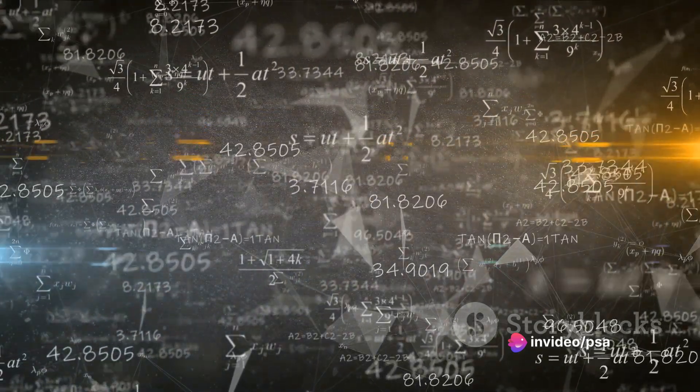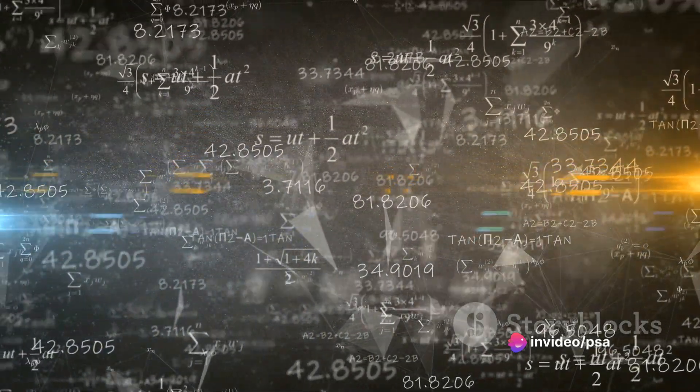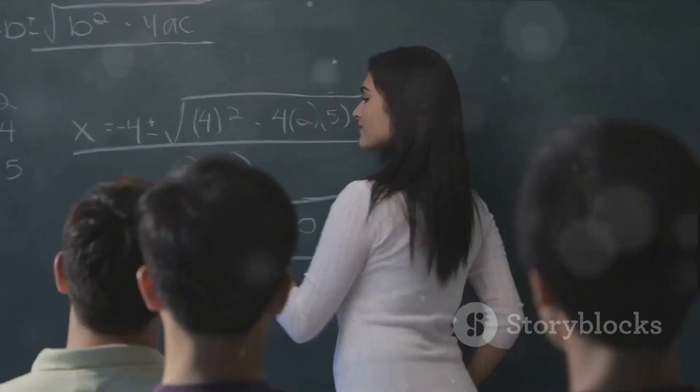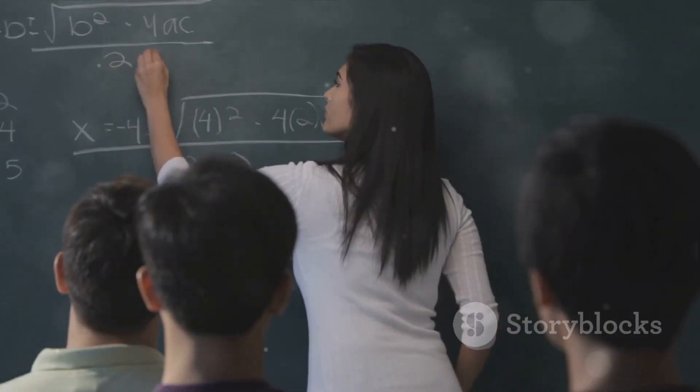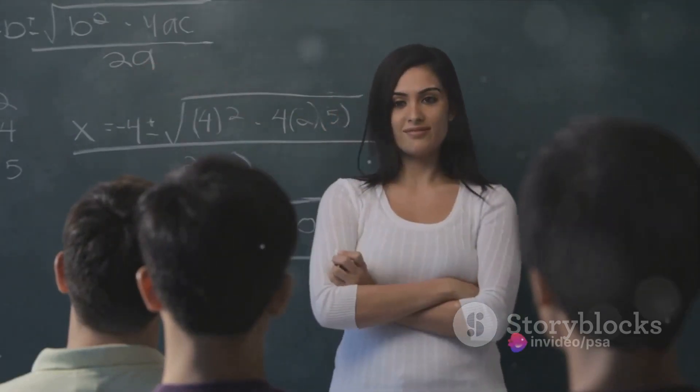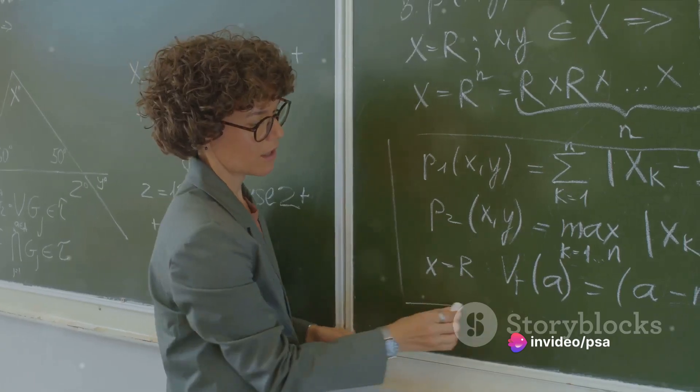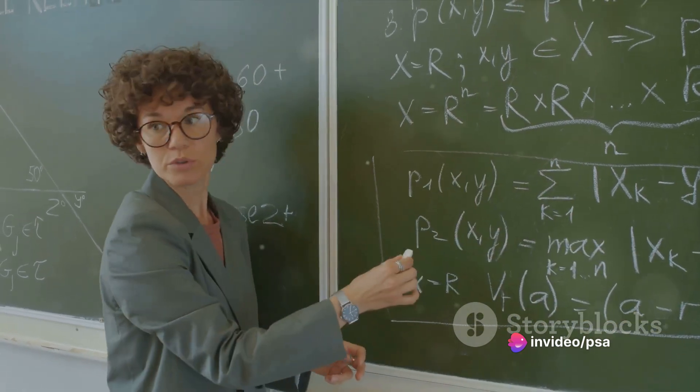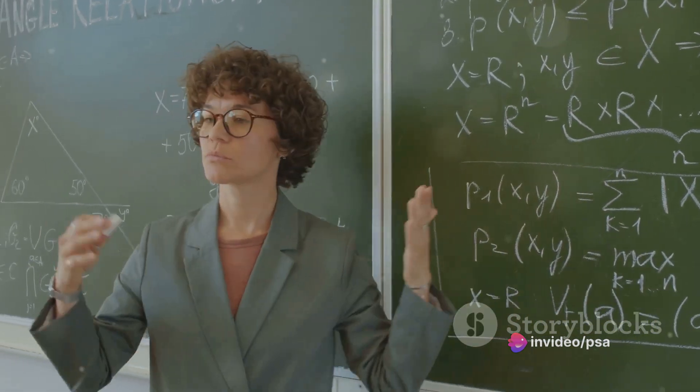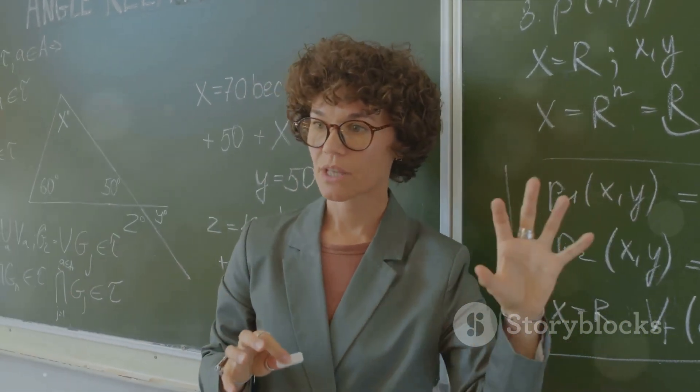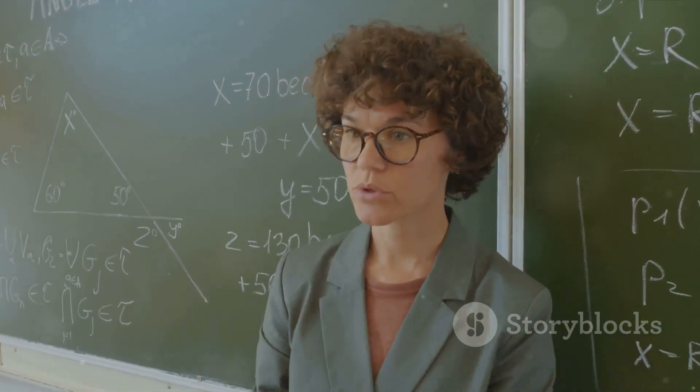They are the backbone of trigonometry, connecting its many branches and concepts together in one harmonious dance. Imagine identities as the secret sauce that allows us to express one trigonometric function in terms of others. This way, they help us simplify complex equations and make them more manageable. They're like the translators of the trigonometric world, helping different functions communicate and relate to each other.